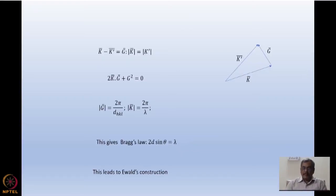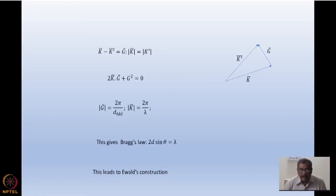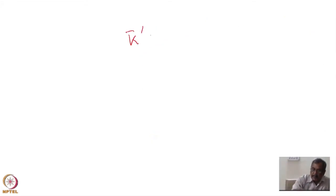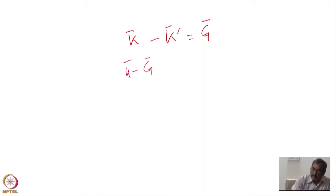For diffraction experiments, I told you earlier that for Bragg diffraction from a lattice, K minus K-prime should be equal to G, a reciprocal lattice vector, and for an elastic experiment the magnitudes of K and K-prime are the same. This is a requirement: K minus K-prime equals G. I can show that this requirement — K minus K-prime equal to G — translates to K minus G, or K plus G (plus or minus G are equivalent), equal to K-prime. This gives 2K·G + G² = 0.